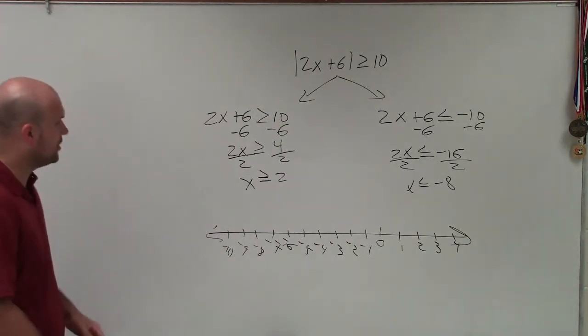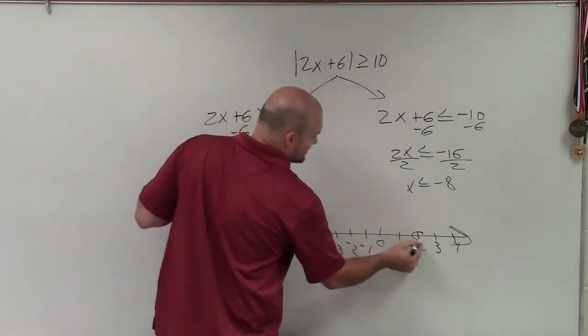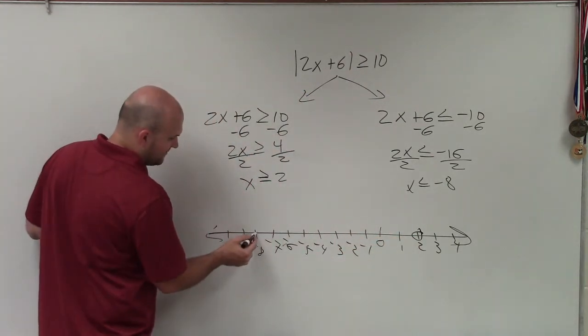OK, so now what we're going to do is at each of these values, I'm going to make a dot. So I'm going to make a dot at 2 and a dot at negative 8.